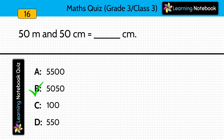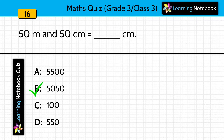Question fifteen: converting meters and centimeters into centimeters. Answer is 5,050. One meter equals 100 centimeters, so 50 meters equals 50 times 100, which is 5,000 centimeters, and then 5,000 plus 50 equals 5,050 centimeters.